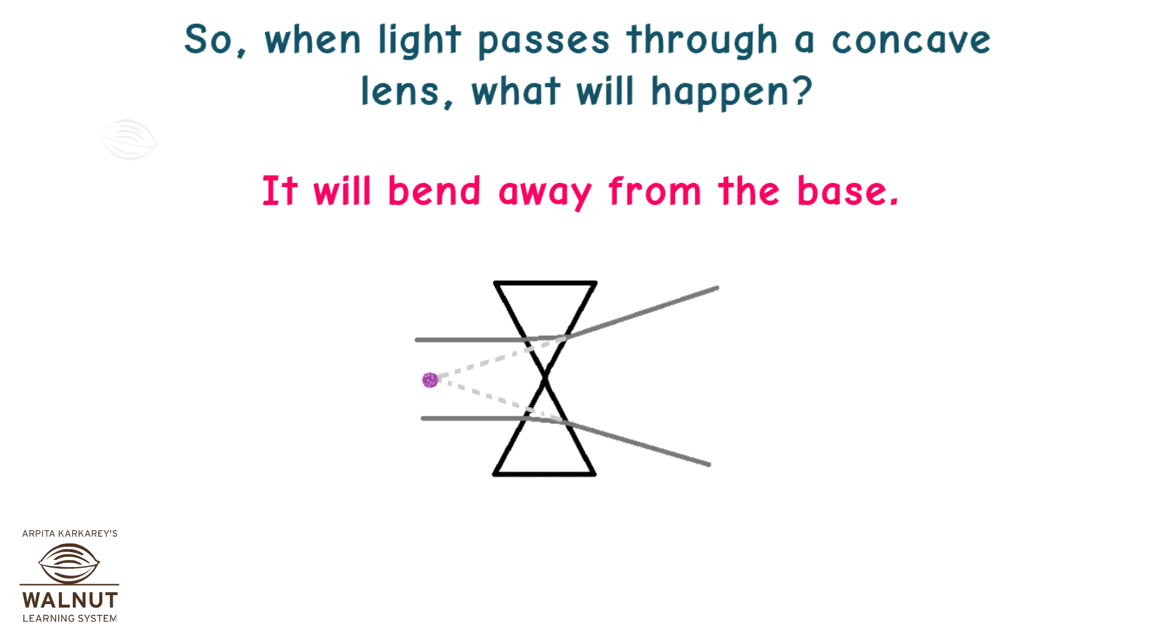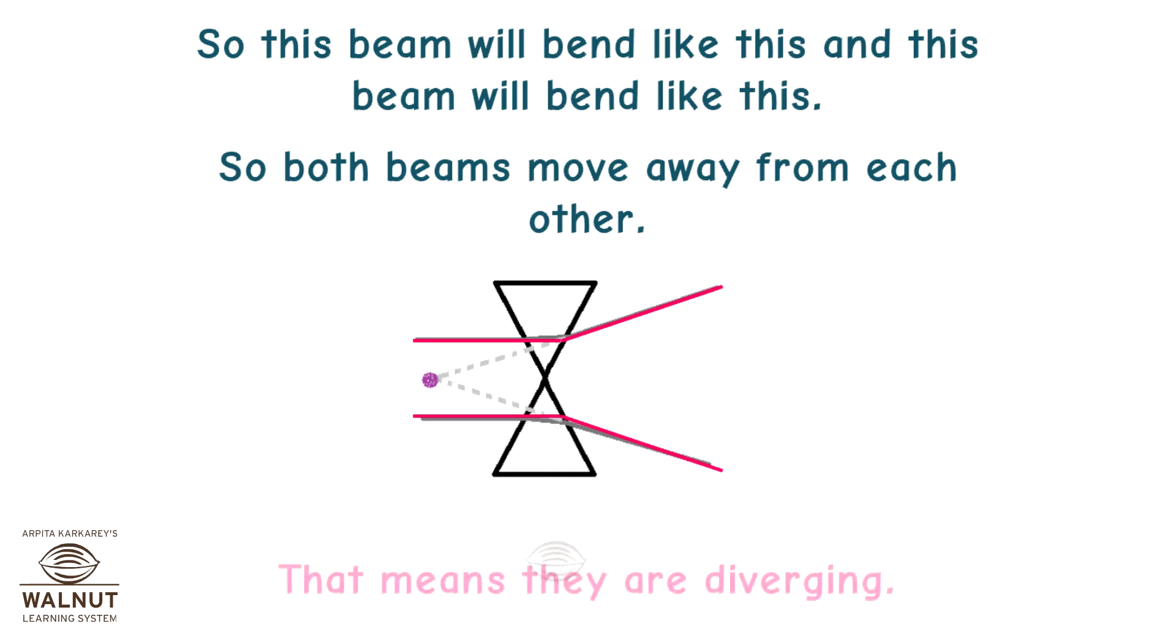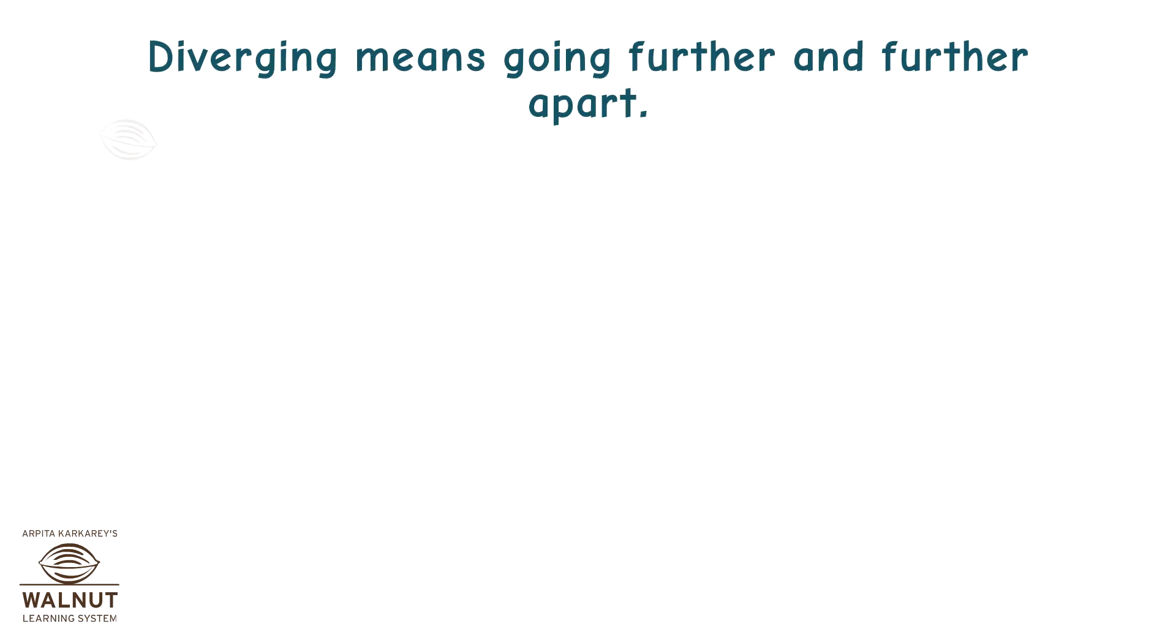It will bend away from the base. So this beam will bend like this and this beam will bend like this. So both beams move away from each other. That means they are diverging. Diverging means going further and further apart. So a concave lens is called a diverging lens.